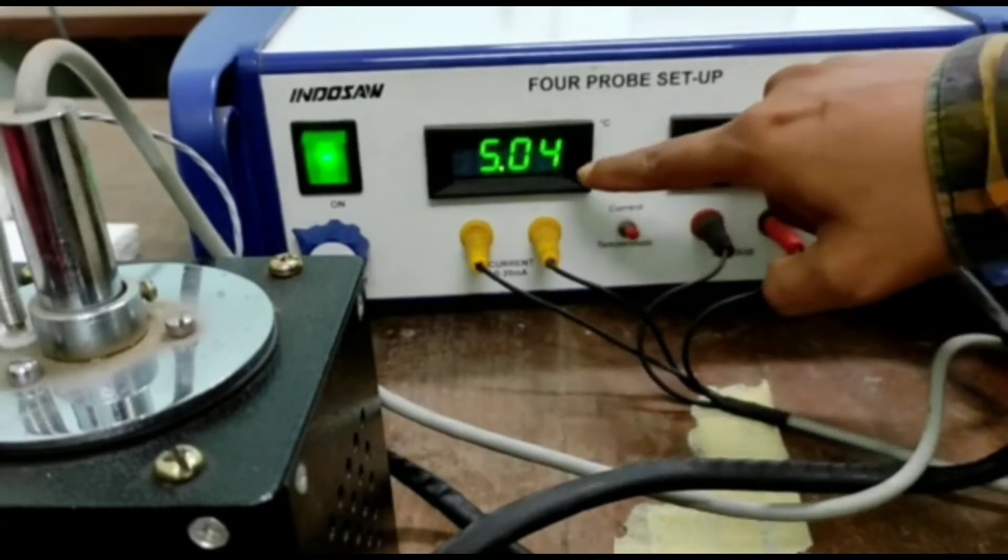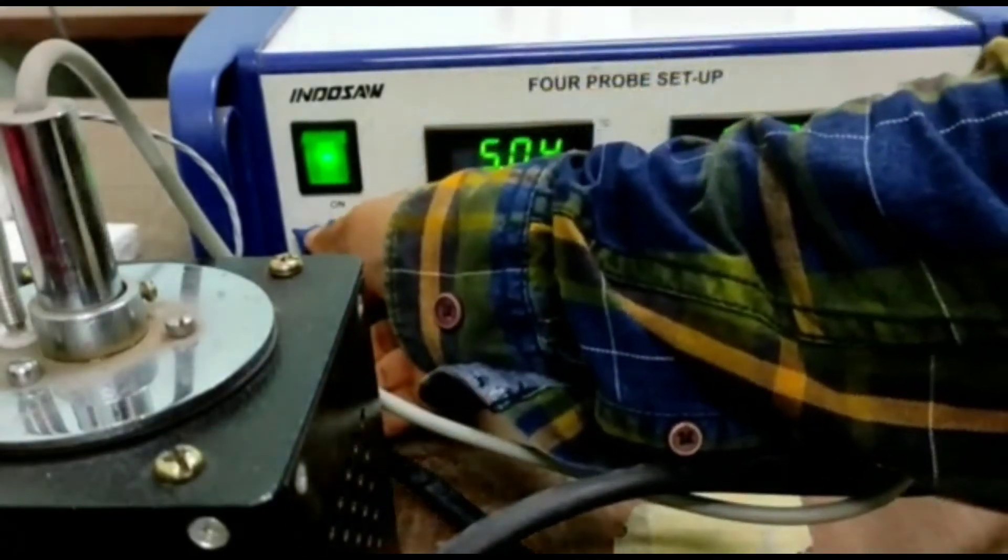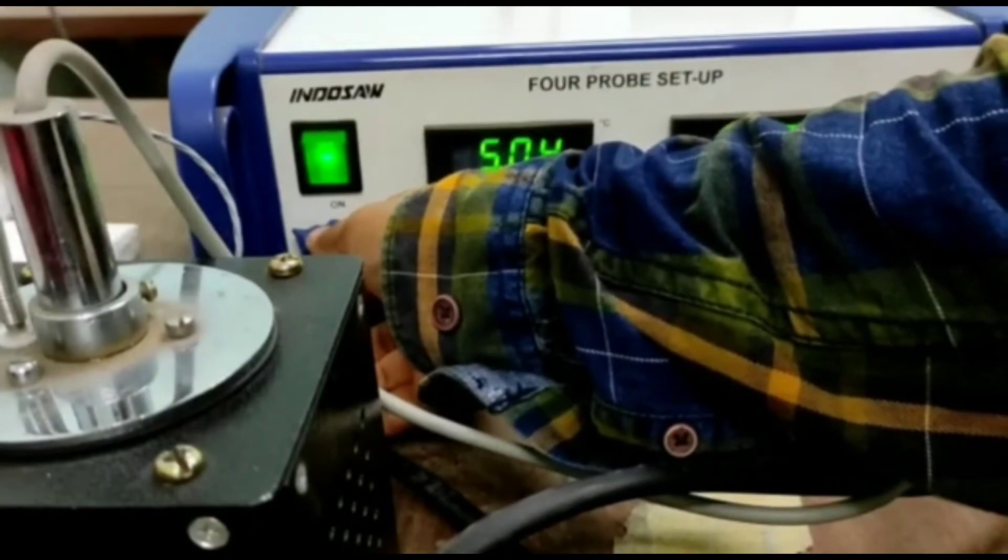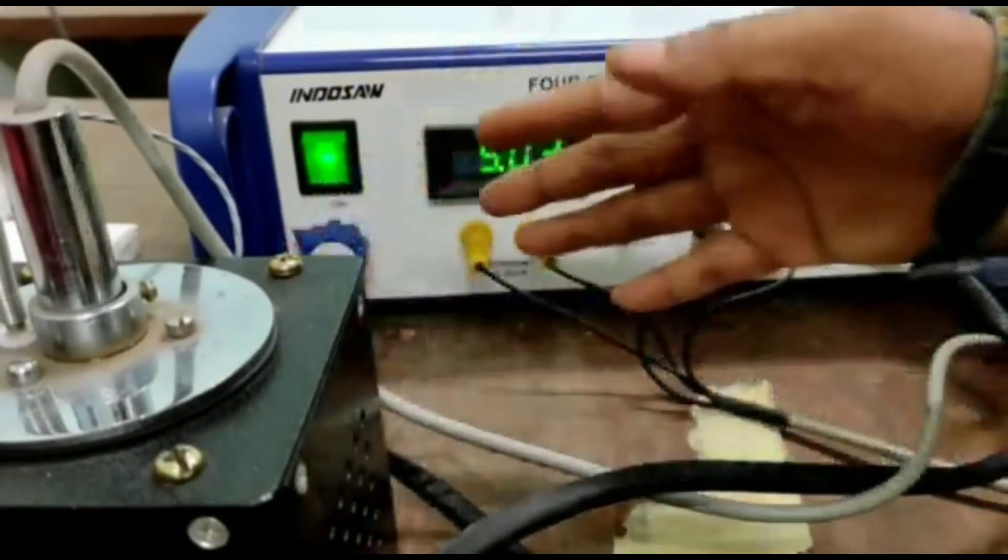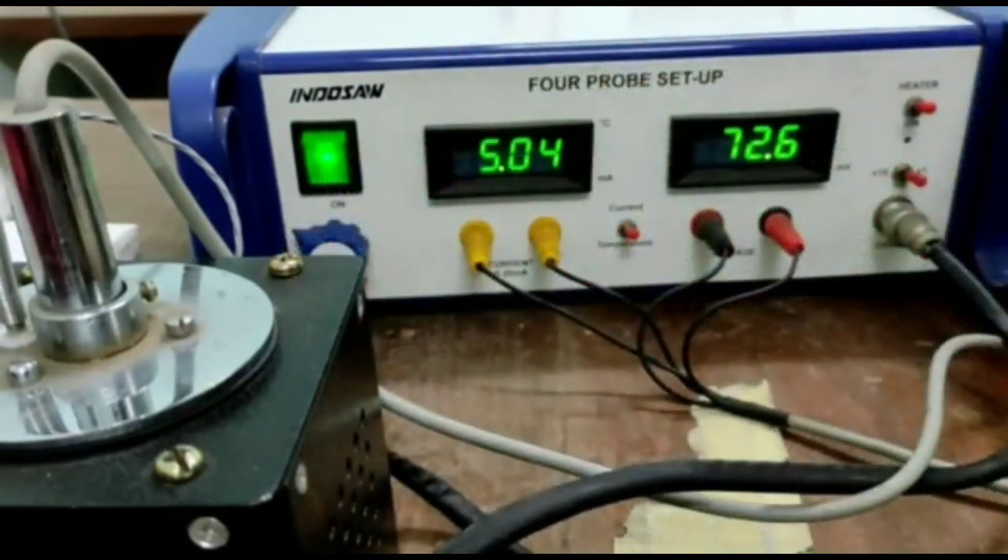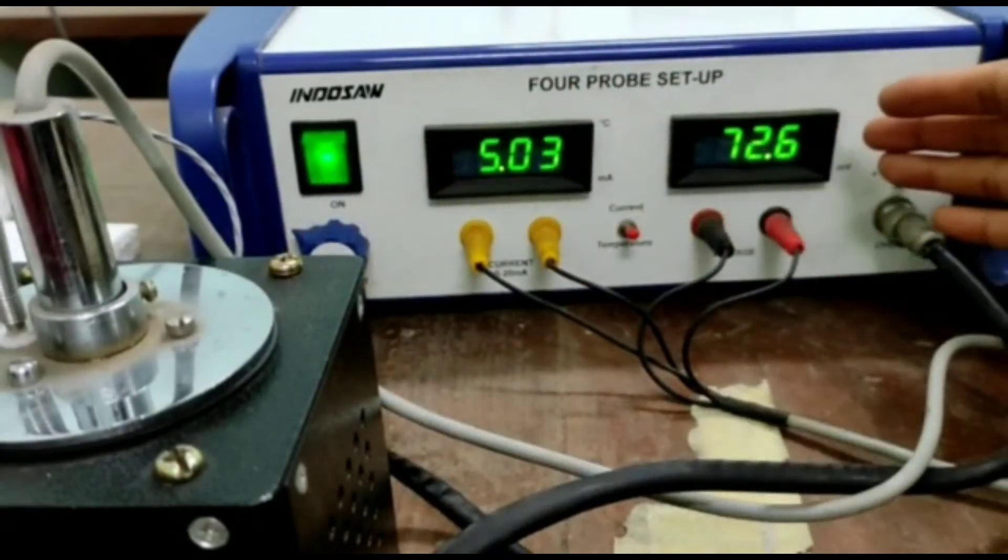So I put it again in current position and give some minimum current to the sample. Already it is given, say 5 milliampere I have given. So 5 milliampere current is given to the sample and corresponding voltage is showing here.